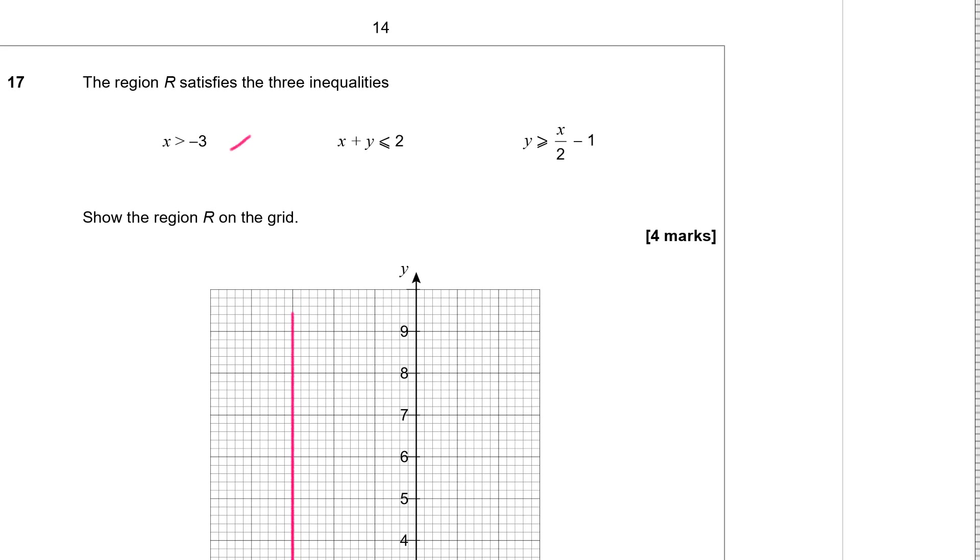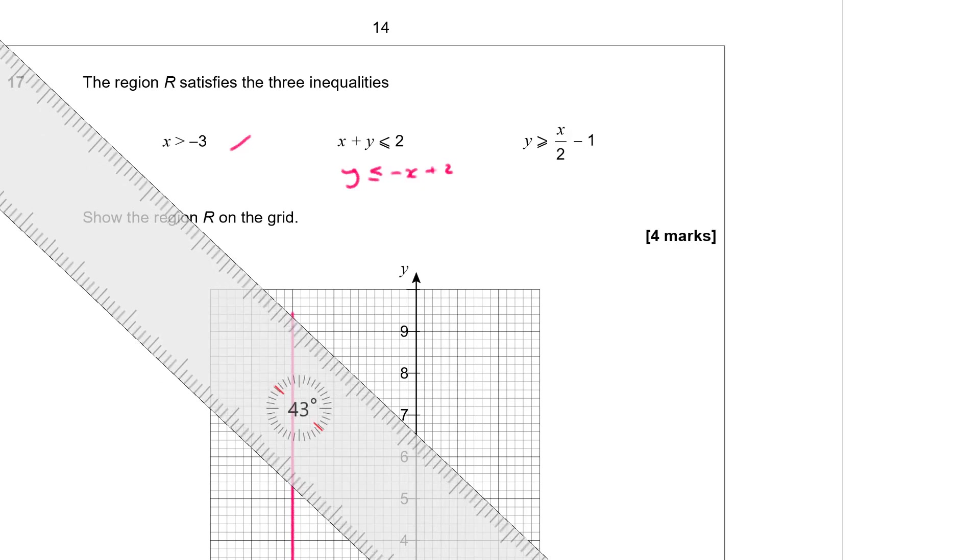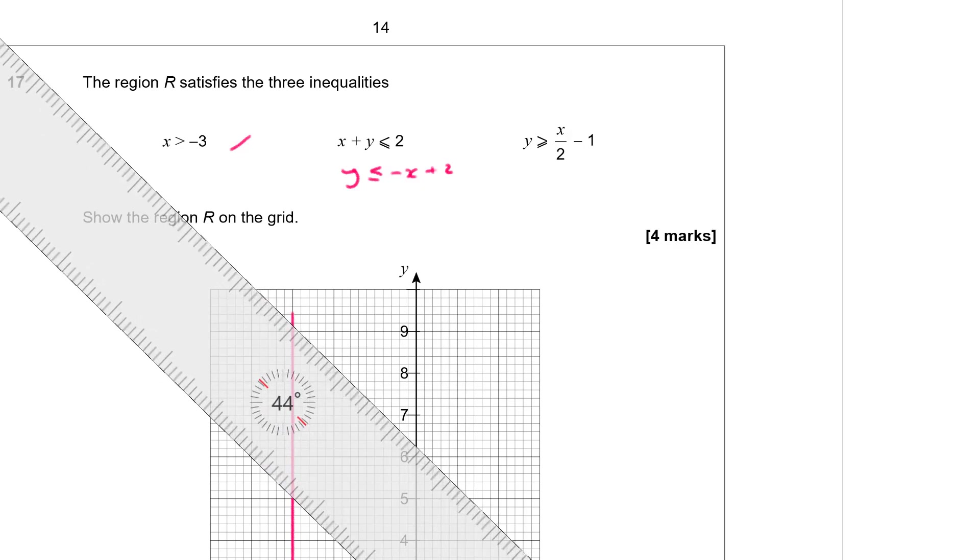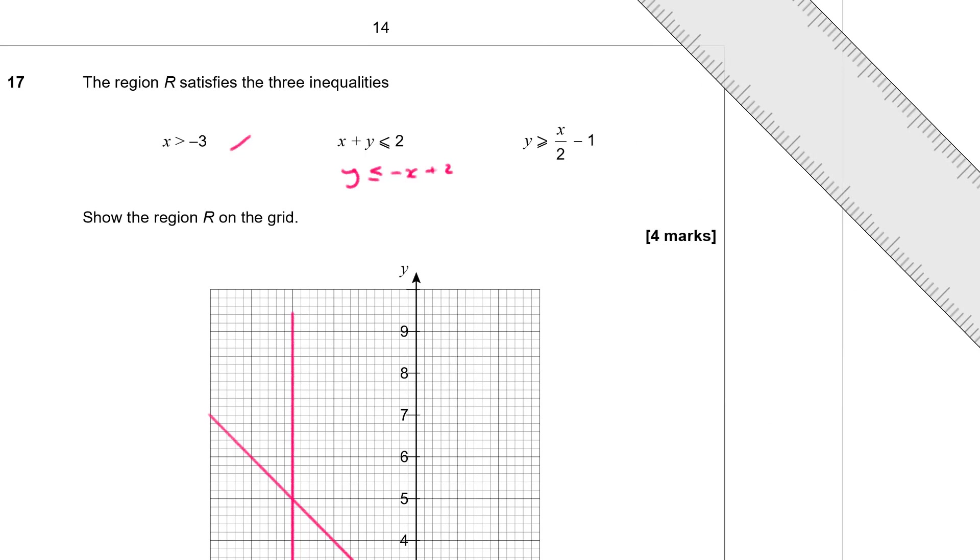So that's the line x equals minus 3. Now the next line. x plus y is less than or equal to 2. Now rearranging that, so y is less than or equal to minus x plus 2. So that's a line that passes through the y intercept of 2 and has a gradient of minus 1. So for every 1 unit you go along you're going to go 1 down. So that's a kind of a 45 degree angle then. So let's draw that one in as well.